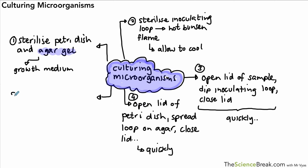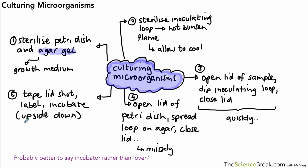For the final step, we will tape the lid shut, label the lid or label the dish with name, date and possibly the type of bacteria that you have and then incubate in an oven upside down at 25 degrees for a few days. So that's basically the outline of the steps.